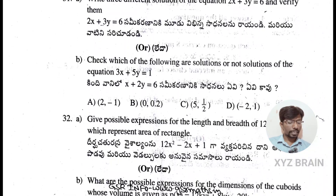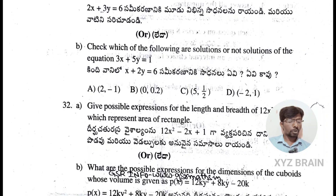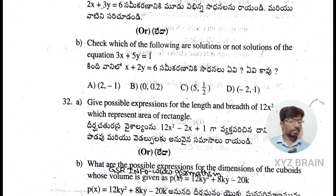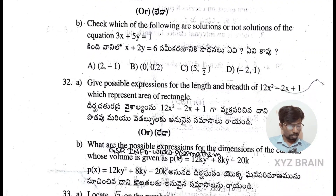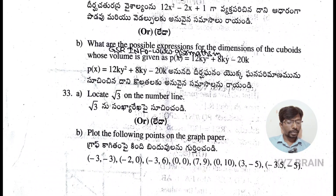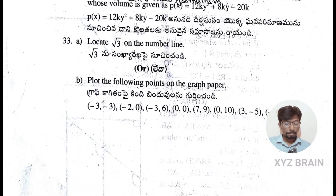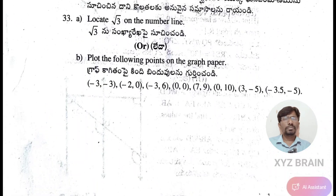Question 32: give possible expressions for the length and breadth of a rectangle whose area is 2x² - 2x + 1. Also, what are the possible expressions for the dimensions of a cuboid whose volume is given as 12ky² + 8ky - 20k? Question 33: locate √3 on the number line, and plot the following points on a graph.